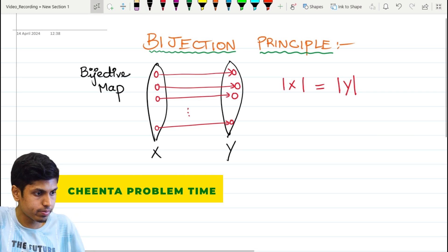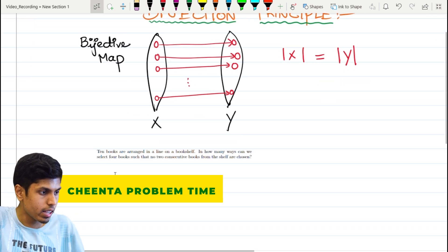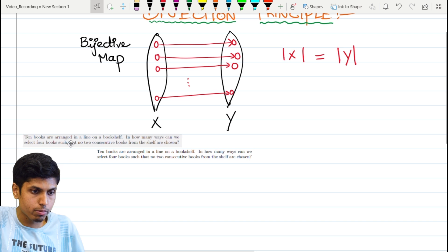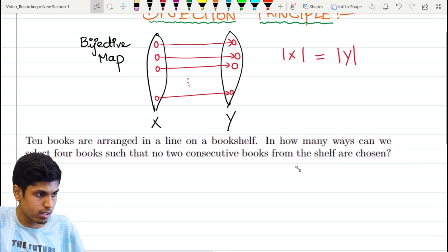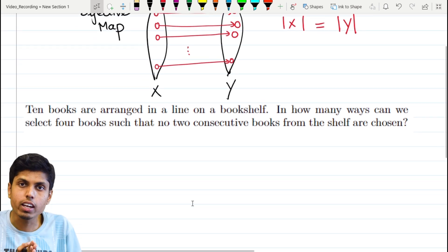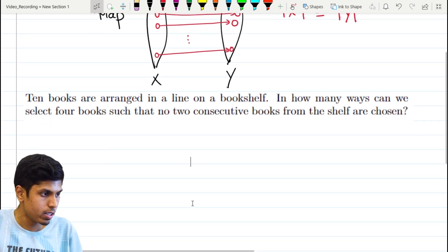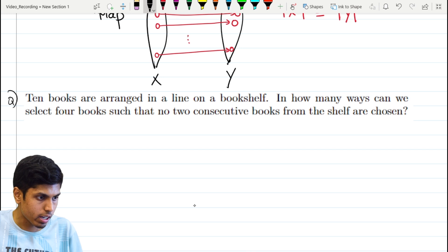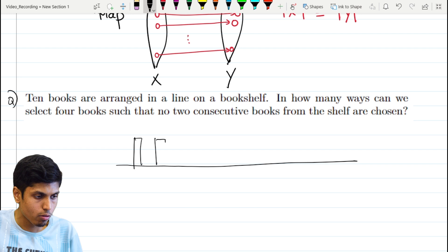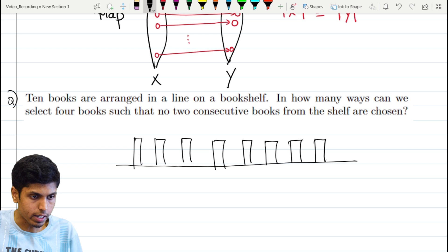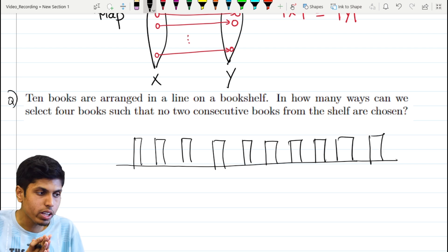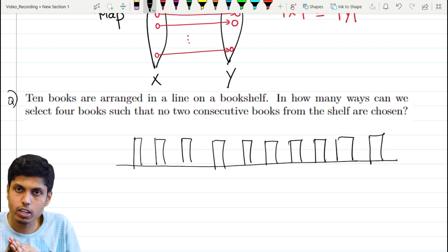So here is a problem that involves the bijection principle. There are 10 books arranged in a line on a bookshelf. So here is a bookshelf and you have 10 books on it: 1, 2, 3, 4, 5, 6, 7, 8, 9, and 10. The question is, in how many ways can we select 4 books so that no two books are consecutive?